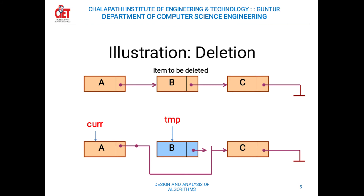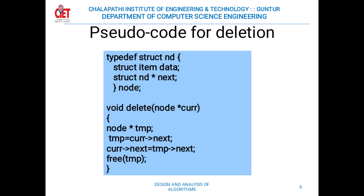The pseudocode for deletion is also shown here. To delete an element, the element to be deleted is called the current node. The next pointer of the current node is saved in a temporary node, and then current node's next is set equal to the temporary node's next. Finally, the temporary node is freed — freeing the temporary node means the removal of the element.